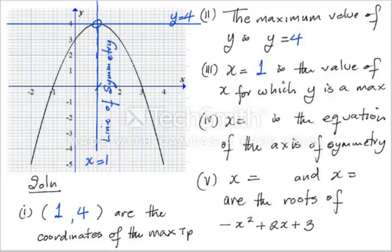The roots of the function are the x-intercepts — where the graph cuts the x-axis. So the roots of y = -x² + 2x + 3 are x = -1 and x = 3.